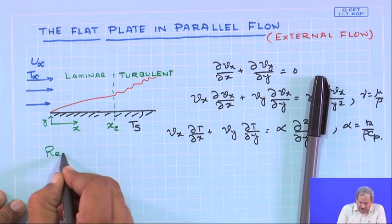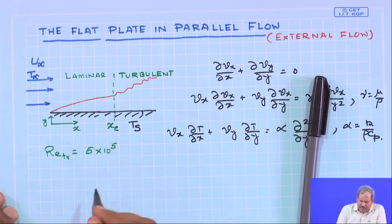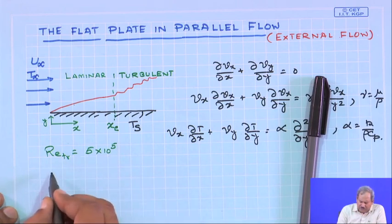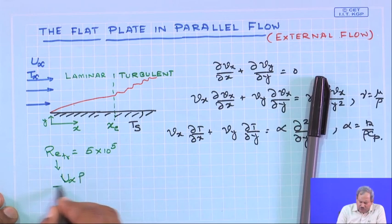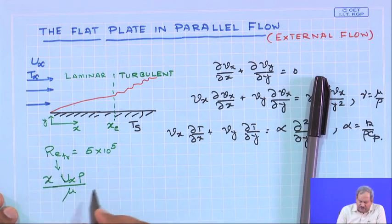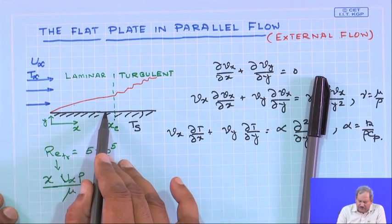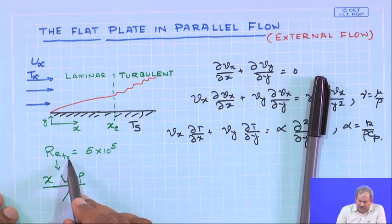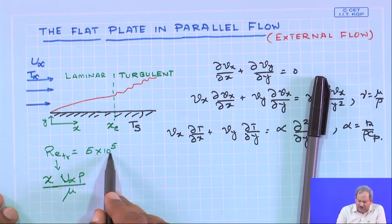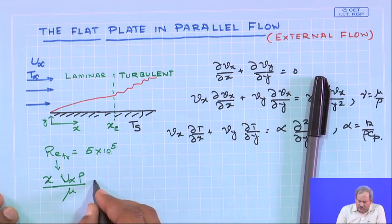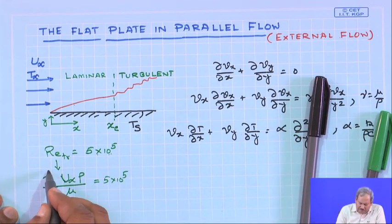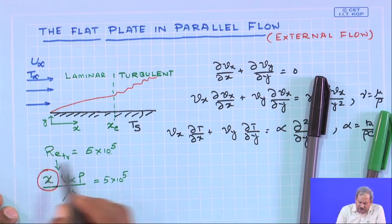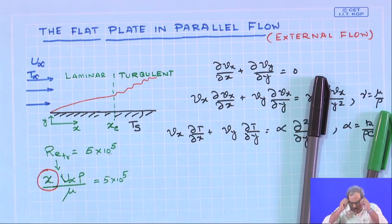The transition Reynolds number is Re_x = 5×10⁵, where Re_x = U∞·ρ·x/μ and x is the length scale. The Reynolds number value will differ at different points along the plate, and when Re_x exceeds 5×10⁵, that location x corresponds to xc. Beyond xc the flow is turbulent. The difference from pipe flow Reynolds number is simply the choice of length scale — here x keeps increasing, so beyond a certain point turbulent flow occurs.